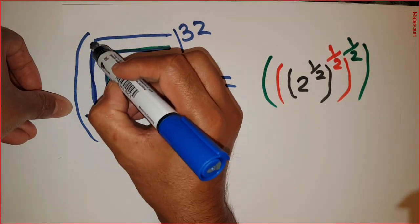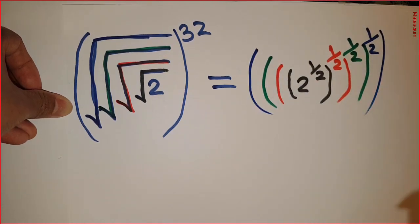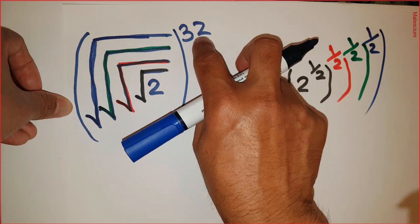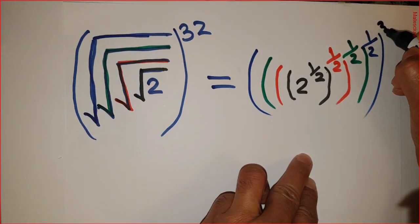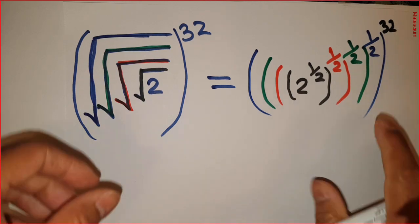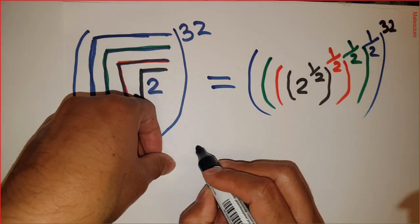And finally, this square root means another half. That's covered by this bracket. And this is the power of 32. I can write it here, whole power of 32. I can rewrite this part in this way.